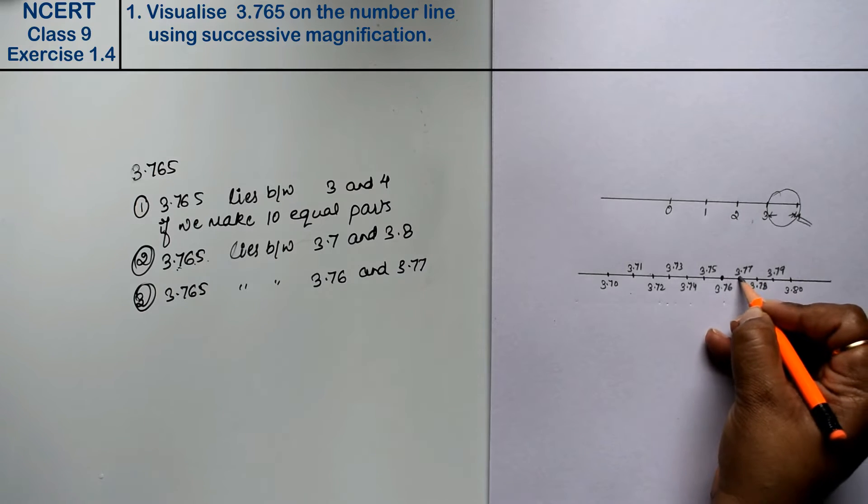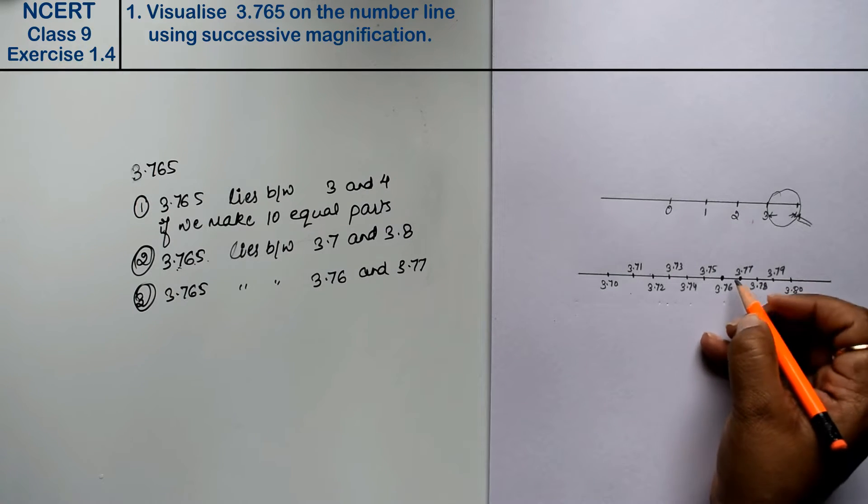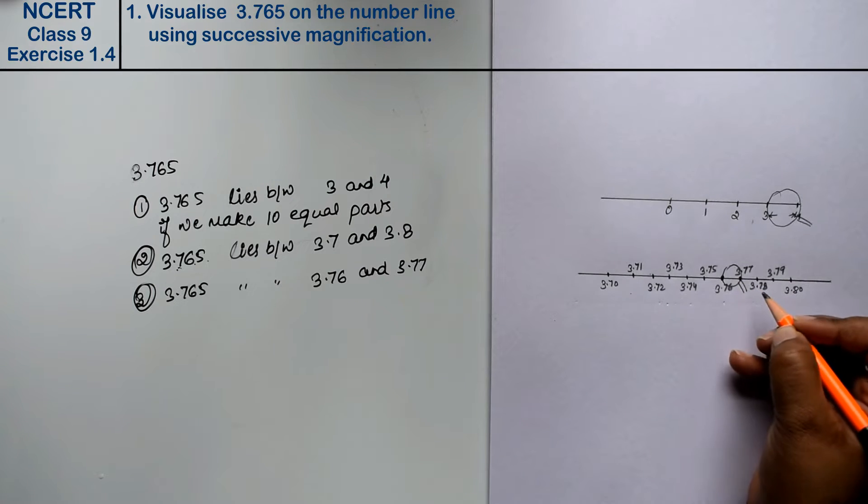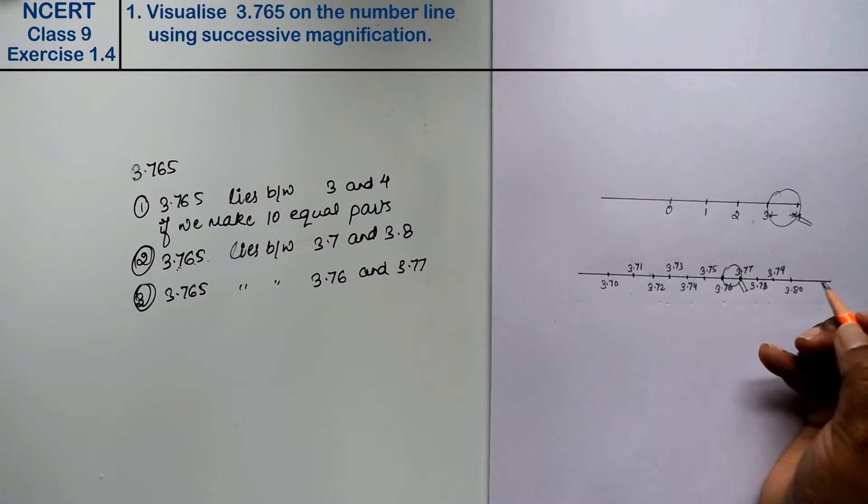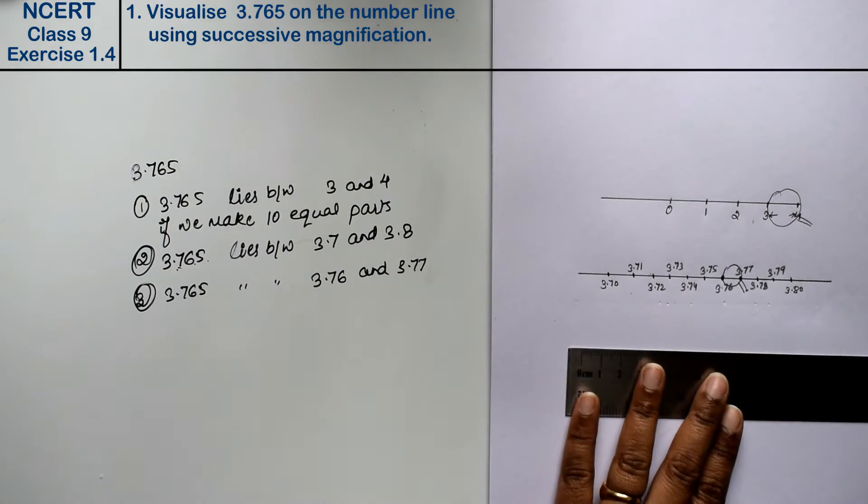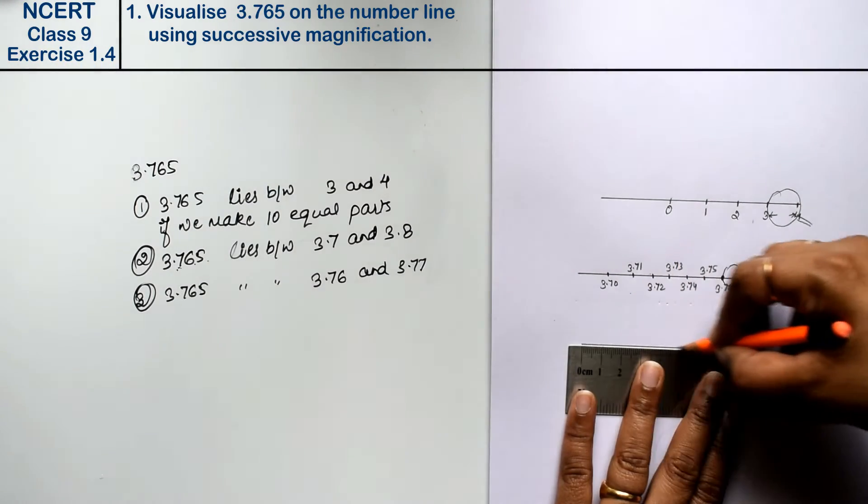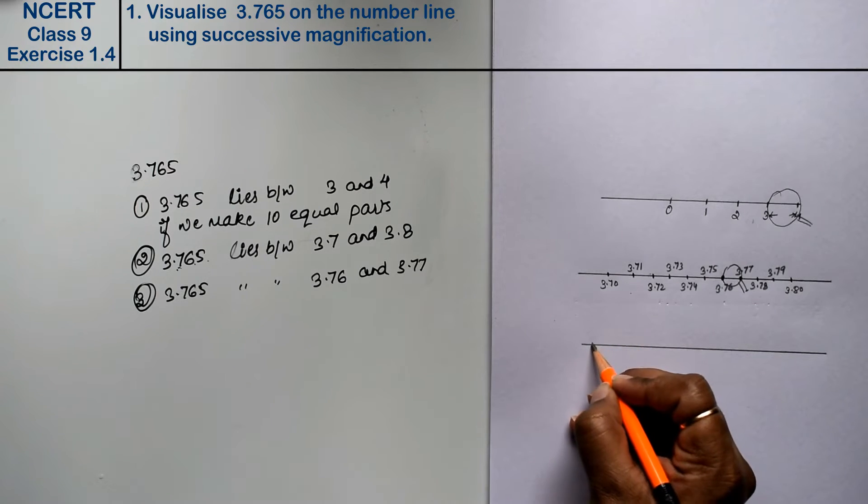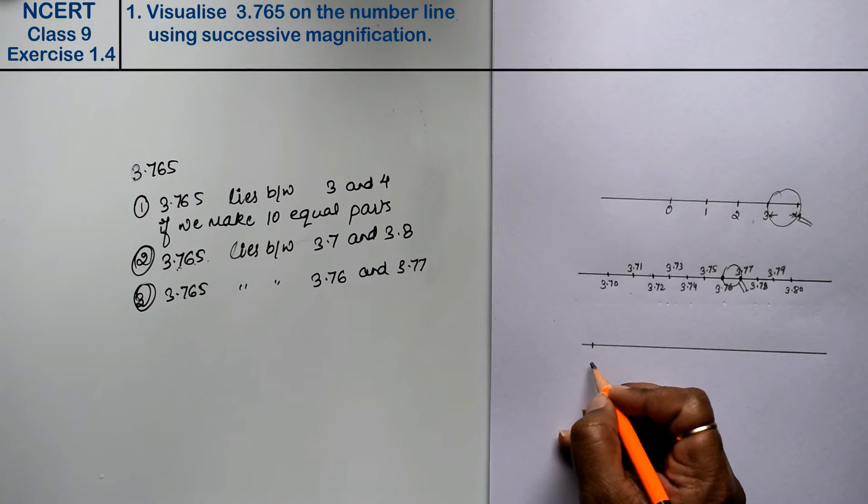So here, you can put it in both sides. I am making a magnifying glass. Now one more line will be made, which will be 3.76 to 3.77.